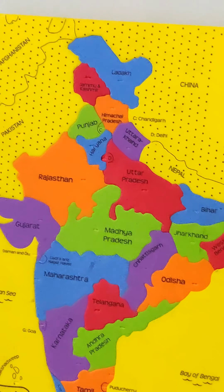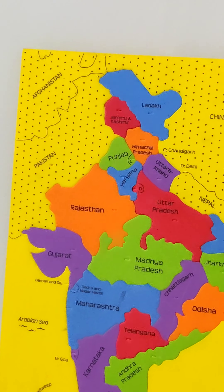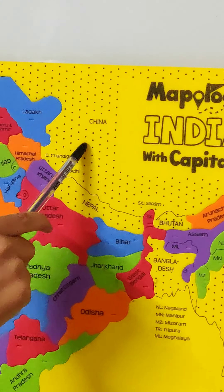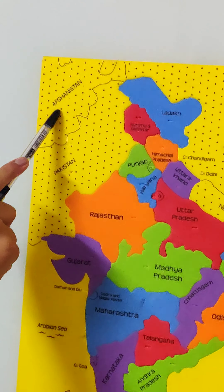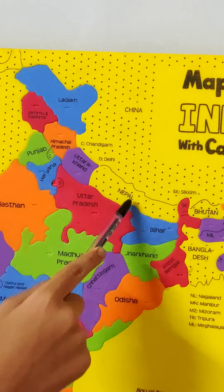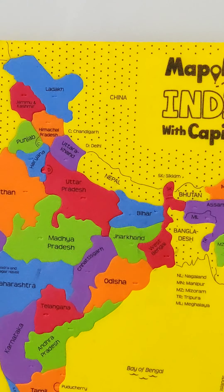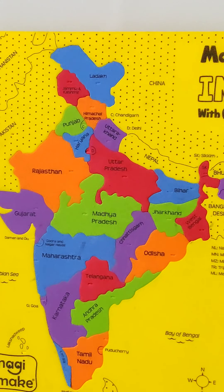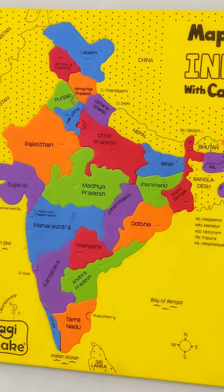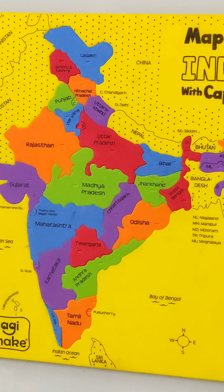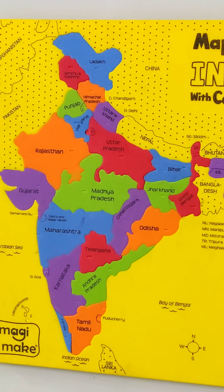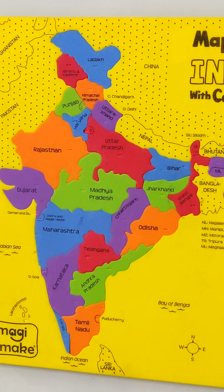India has neighboring countries like China, Pakistan, Afghanistan, and Nepal. India has in total 29 states and 8 union territories. Telangana is the latest state to be added.